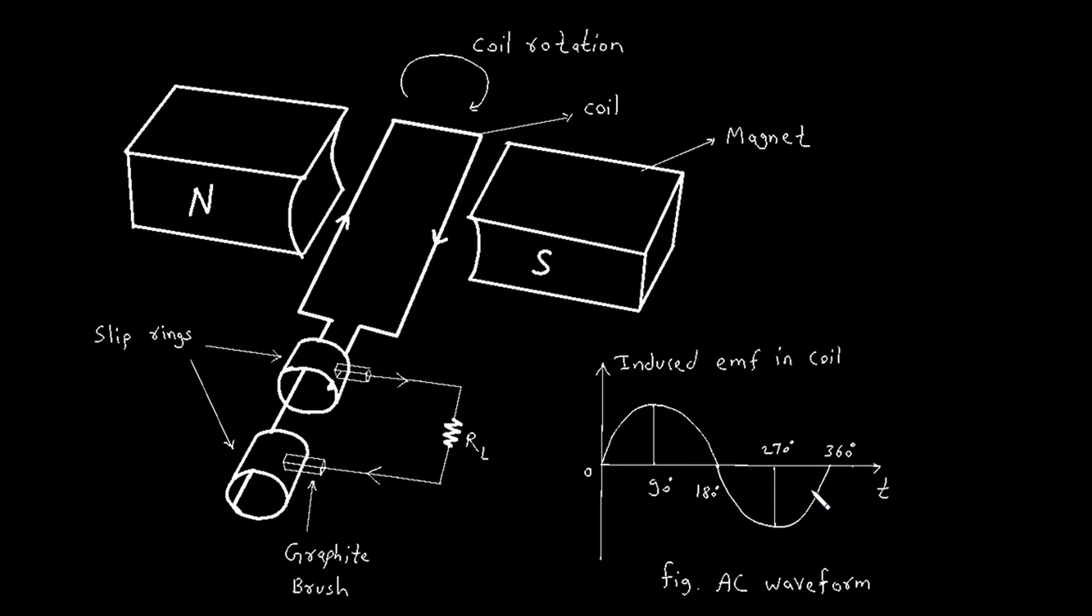The generated alternating EMF can be used to power electrical devices. In our diagram, we see a resistor labeled RL connected in the circuit. This resistor represents any electrical load that the generator might power, such as a light bulb or an appliance.